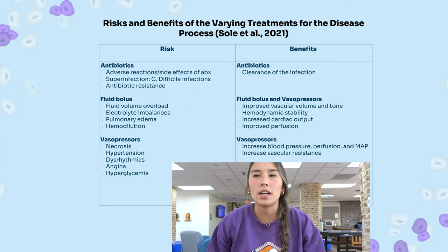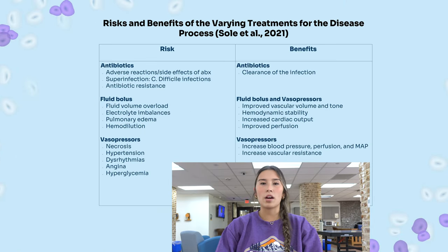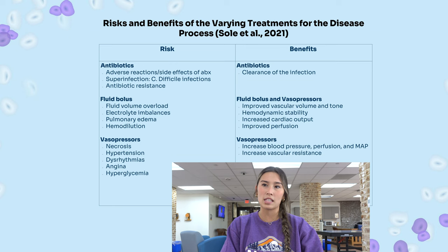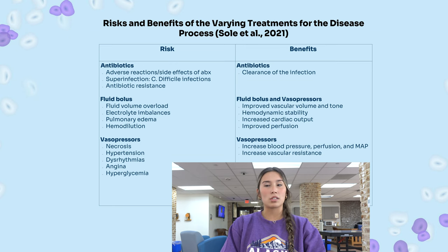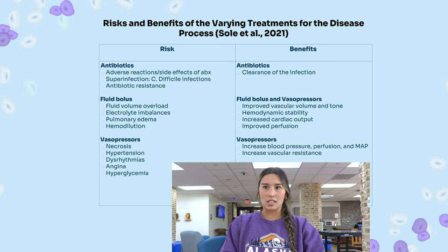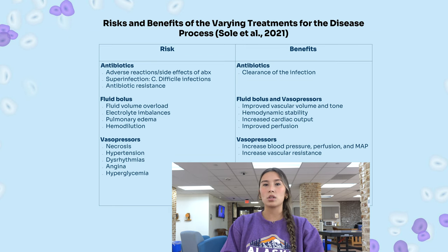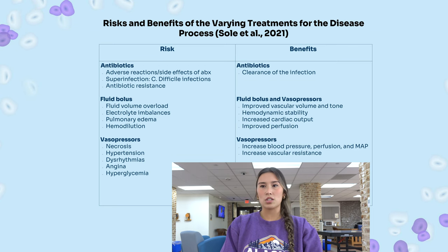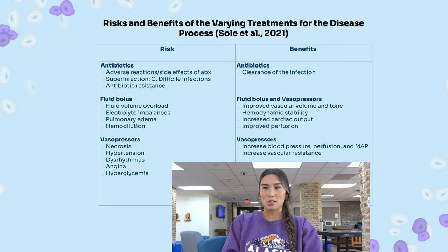Some risks and benefits of the varying treatments: Antibiotics can cause adverse reactions, allergic reactions, superinfections such as C. diff., and antibiotic resistance. The benefit is clearance of the infection. Risk for fluid bolus includes fluid volume overload, electrolyte imbalances, pulmonary edema, and hemodilution. Benefits are improved vascular volume and tone, hemodynamic stability, increased cardiac output, and improved perfusion. Risks for vasopressors include necrosis, hypertension, dysrhythmias, angina, and hyperglycemia. Benefits from vasopressors include increased blood pressure, perfusion, MAP, and increased vascular resistance.